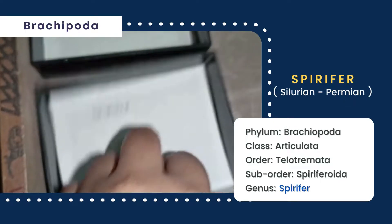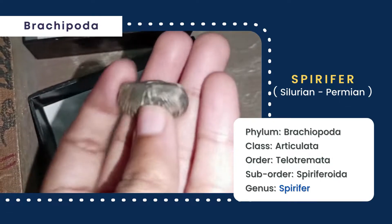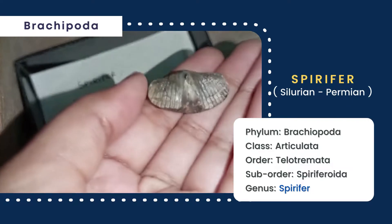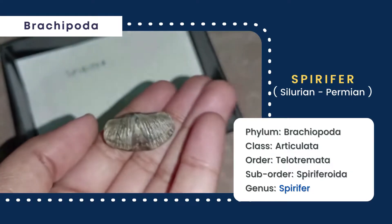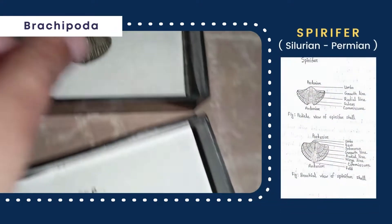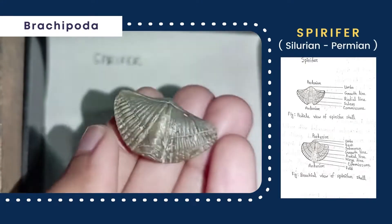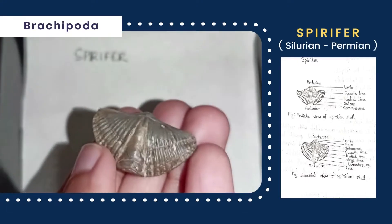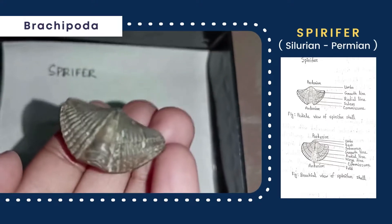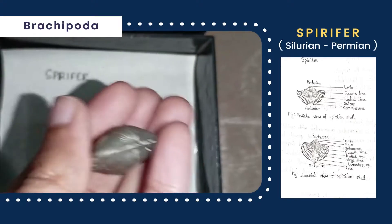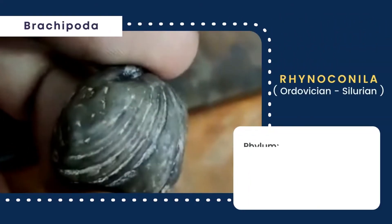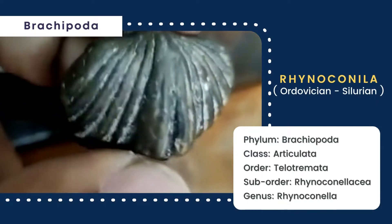The hinge line is spiriferate type with a suberect beak. Both brachial and pedicle valves are ornamented by distinct radial lines and few indistinct growth lines. The pedicle valve bears a distinct inter-area which is interrupted by deltidium. The brachial valve bears a prominent fold and the pedicle valve bears a corresponding sulcus.